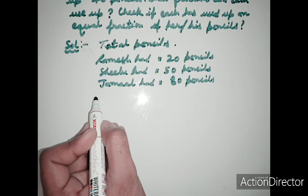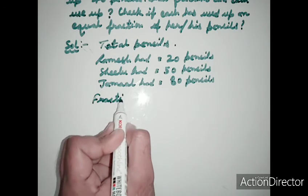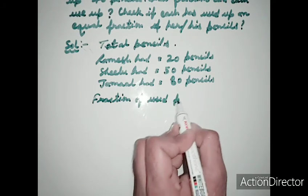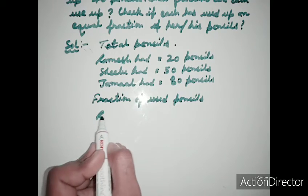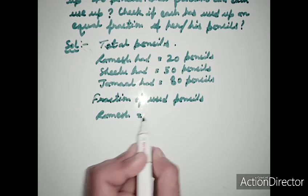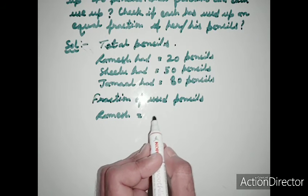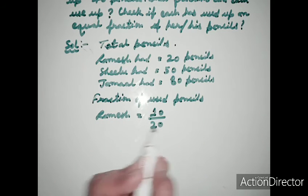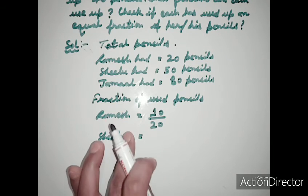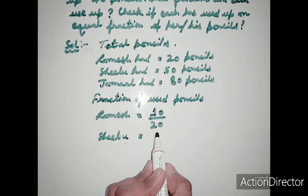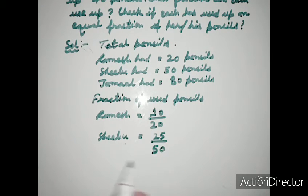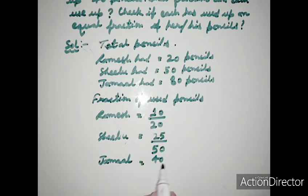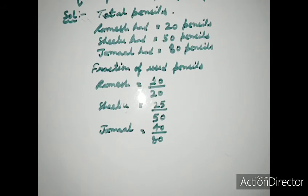We write the fraction of used pencils upon total pencils for each person. Fraction used by Ramez: 10 upon 20. Fraction used by Silu: 25 upon 50. Fraction used by Jamal: 40 upon 80.